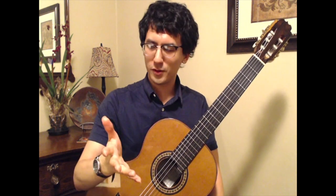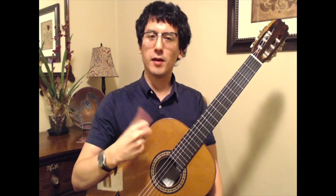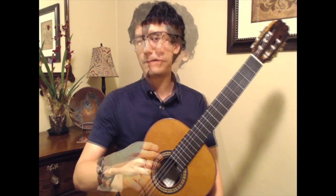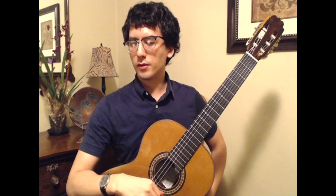The next four bars shift to almost the complete opposite: the key of C major, which is the relative major key. For C major, one quote says: 'a pure, certain, and decisive manner, full of innocence, earnestness, and deepest religious feeling.' Another says: 'completely pure — its character is innocence, simplicity, naivety, and children's talk.' And the last says: 'state of nature, virginal chastity and purity, lovely innocence of youth.' With those quotes in mind, I'll play the C major section.